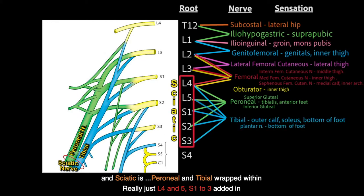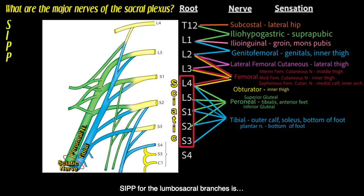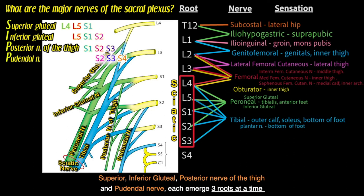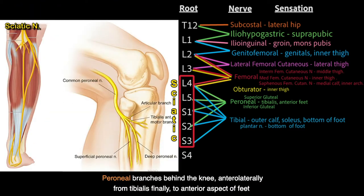And sciatic is peroneal and tibial wrapped within — really just L4 and L5, S1 to S3 added in. Sit for the lumbosacral branches: superior and inferior gluteal, posterior cutaneous nerve of the thigh, and pudendal nerve — each emerge with roots at a time.